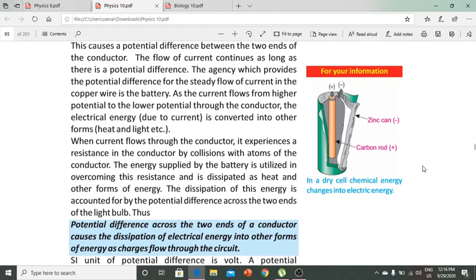The flow of current will continue as long as there is a potential difference. The agency which provides potential difference is a steady flow of current through the battery.